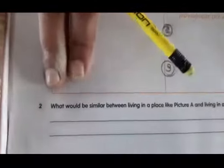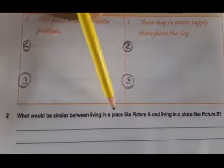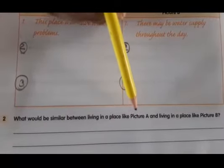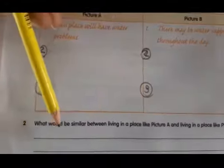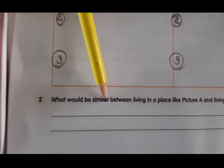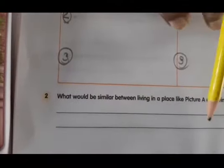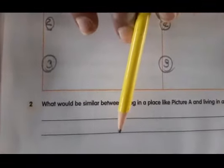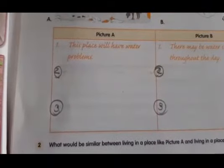Second question: what would be similar between living in a place like Picture A and living in a place like Picture B? So, what you can write here? In both these places, we can live with our family. In both these places, people may find shelter to live. You can see the words from the board and write. Children, think and write here.